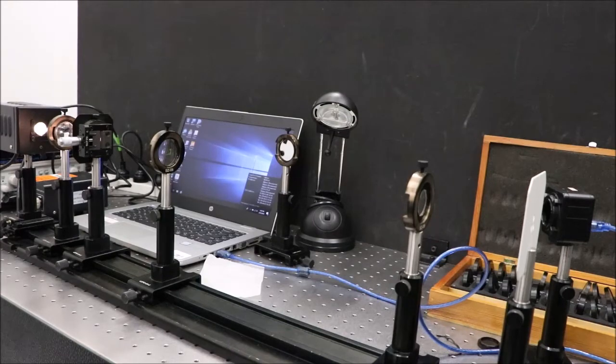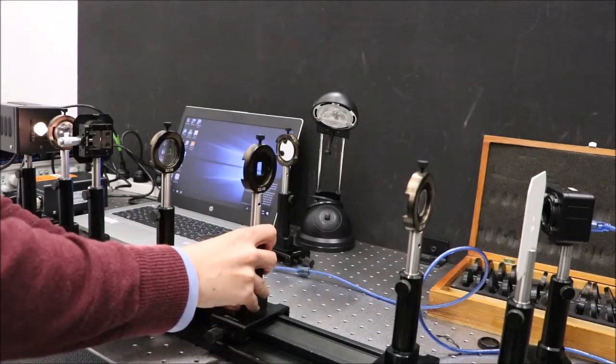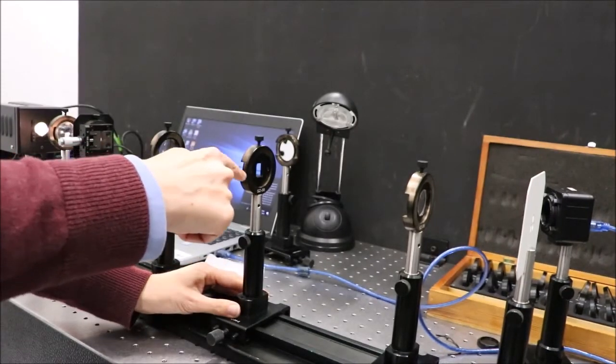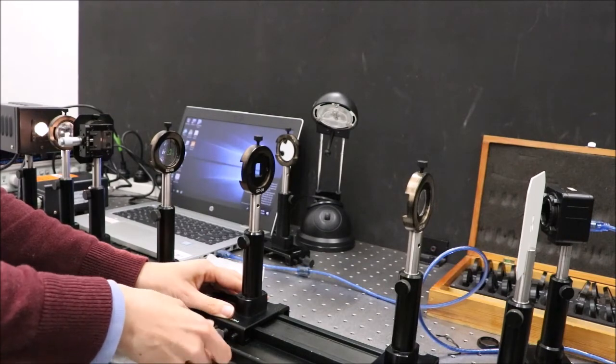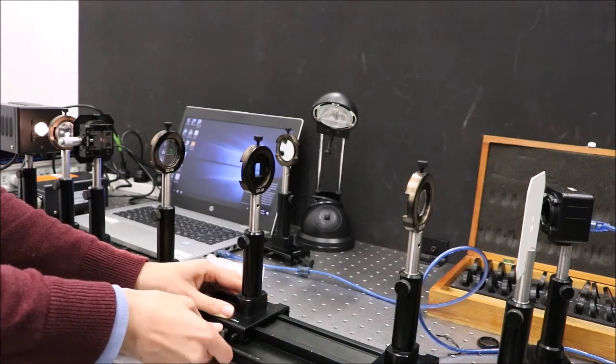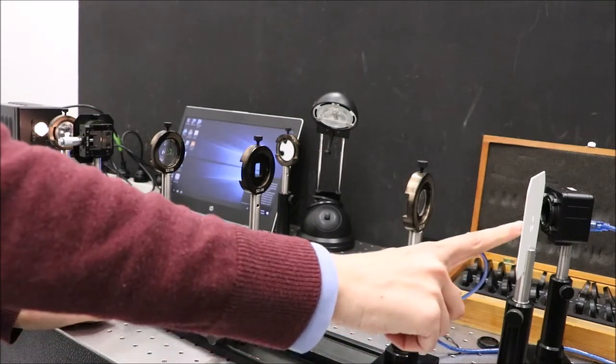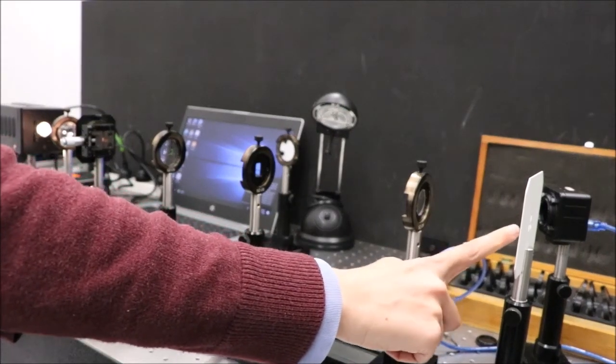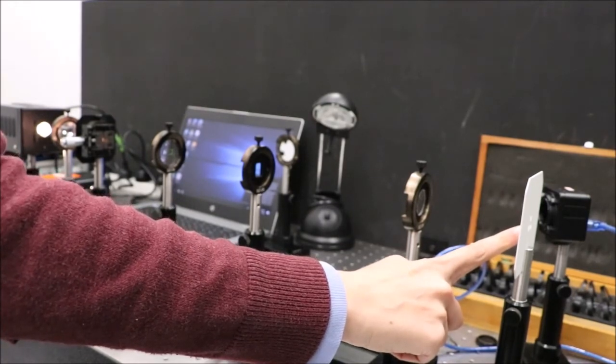Now we're going to add the transmission grating. It doesn't matter where it goes because the light along here is parallel. And as soon as we do that, what you can see on the screen is no longer one image of the slit but the image of the slit that's been split into all of its colors.